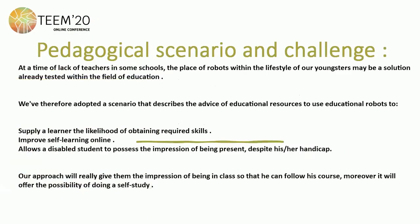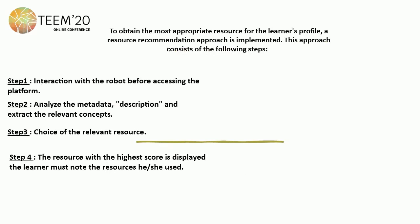Moving to our next point — the lack of teachers in some schools — the place of robots within the lifestyle of young students may be the solution already tested. Our scenario describes the use of educational robots to improve self-learning online and allow disabled students to have the impression of being present despite their handicap. Our approach will give them the impression of being in class so they can follow their course.